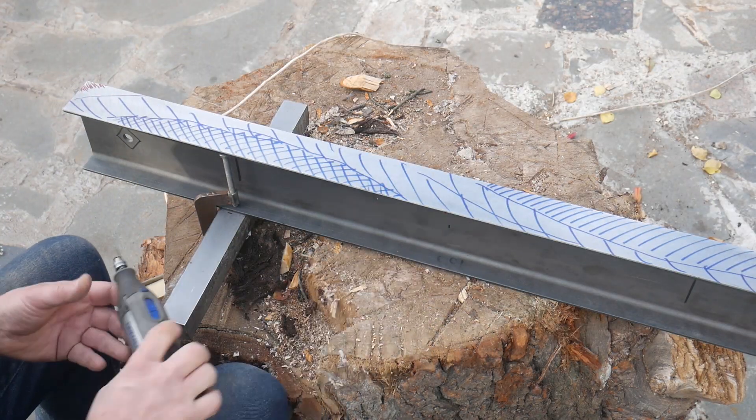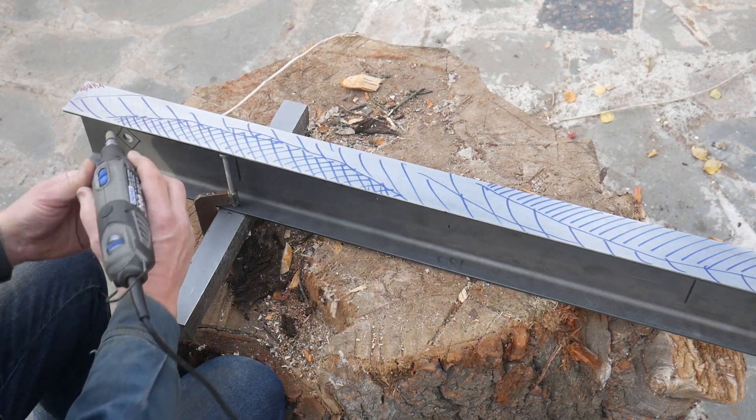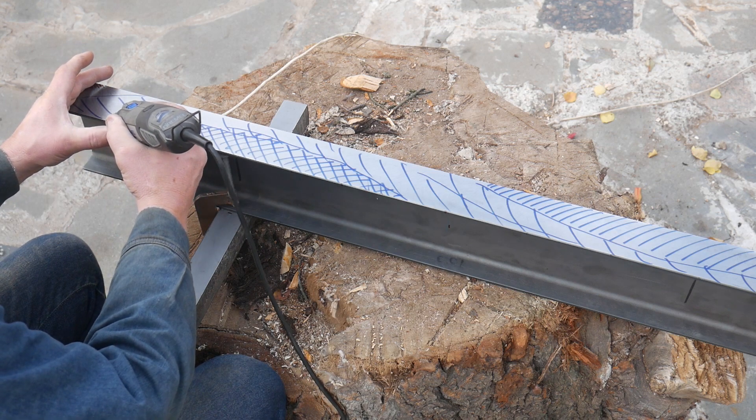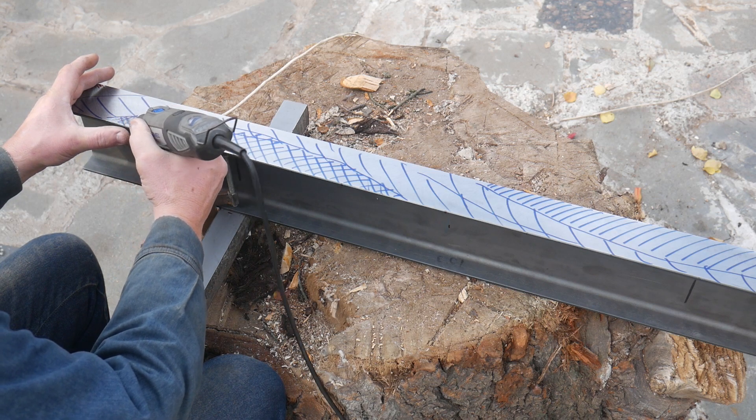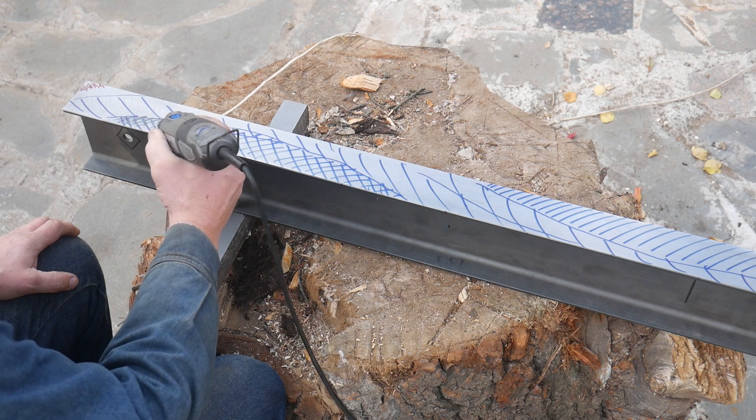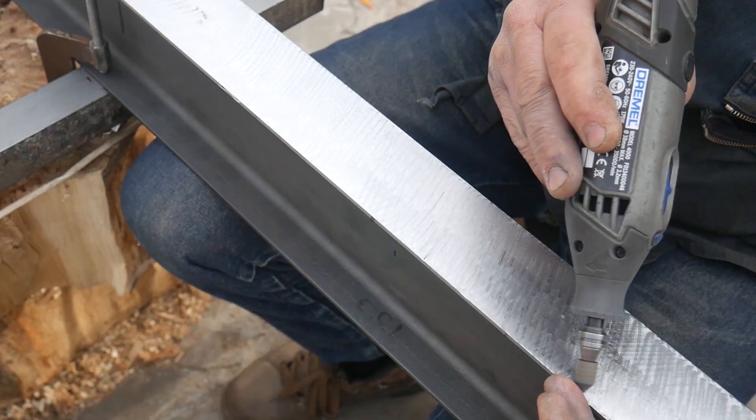When I make a precision surface, I need to remove small layers of metal. In this case, it is necessary to make an exact plane.